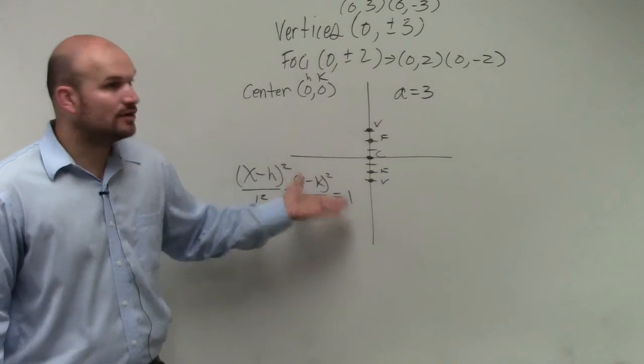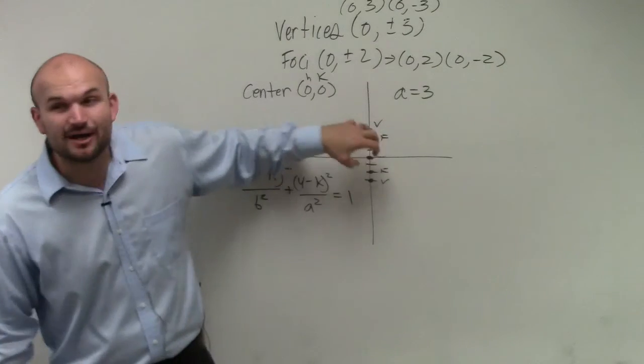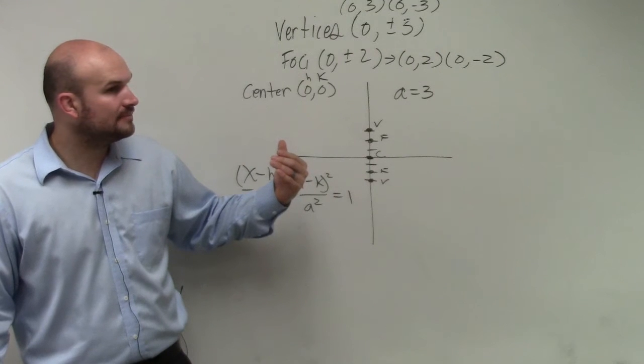Now, b, I don't know b, right? b is the distance from the center to your co-vertices. I don't have any co-vertices here, correct? So yes.